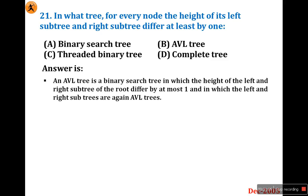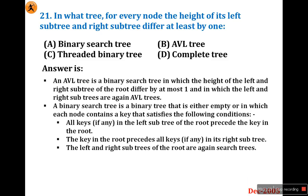In an AVL tree, the root node balance factor is 0. If the left subtree is not there it is -1, and if the right subtree is not there it is -2. A binary search tree is a binary tree that is either empty or in which each node contains a key satisfying certain conditions.